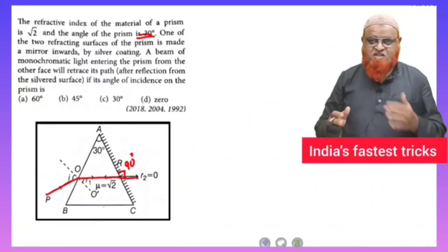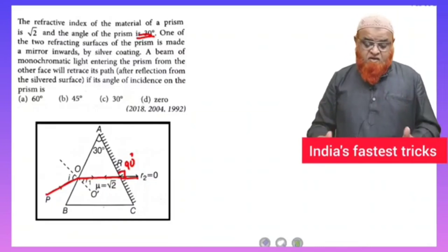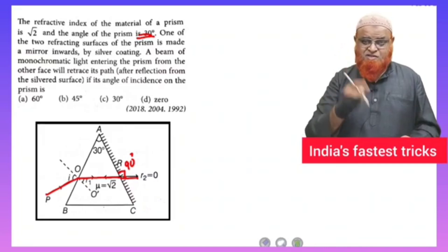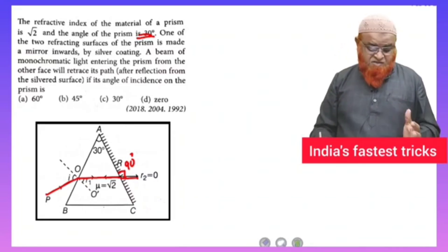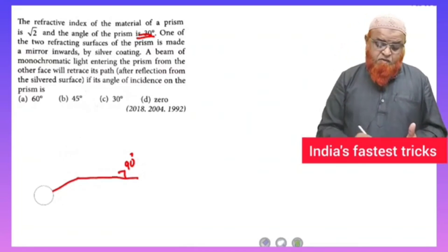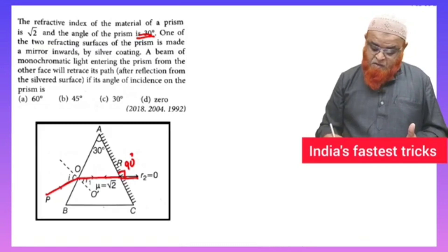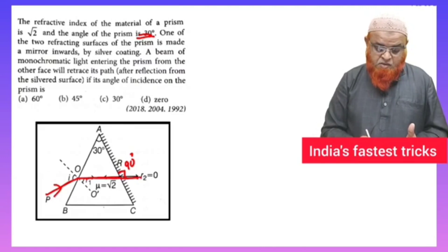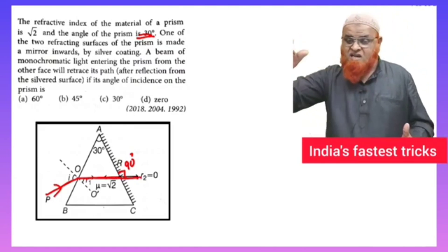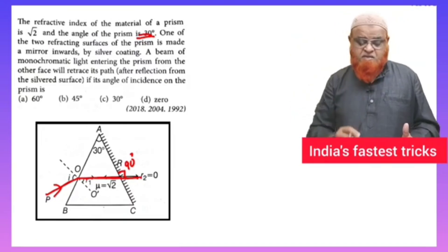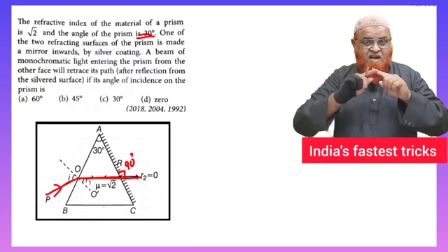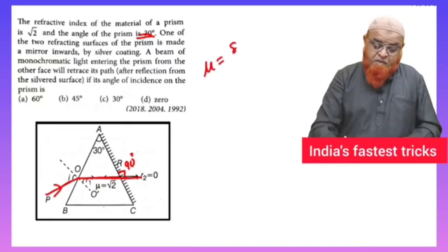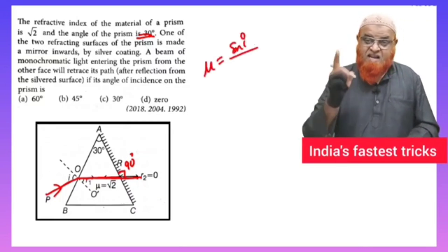Welcome to Pakruddin Academy of Physics. For this type of prism problem, let us solve it using a fast trick. Whenever the light ray enters in this direction and comes out perpendicularly to the other side of the prism, you can convert Snell's law using a direct formula.